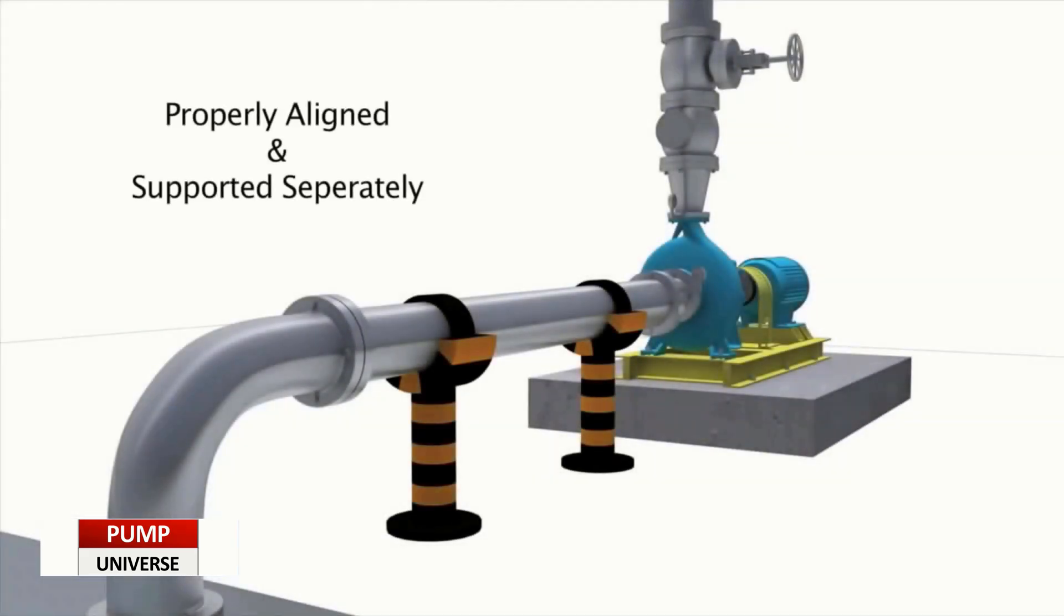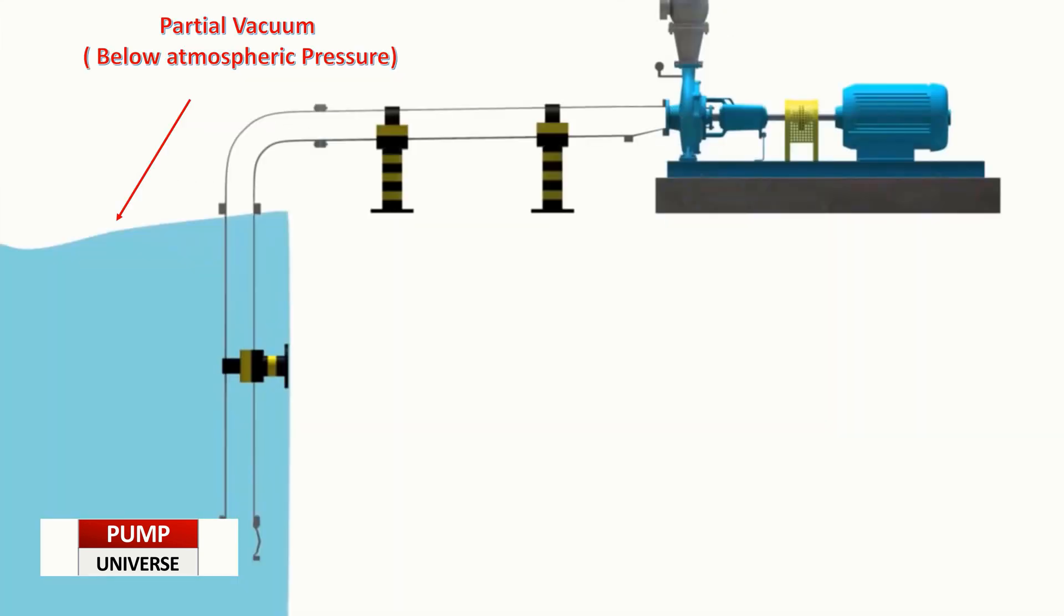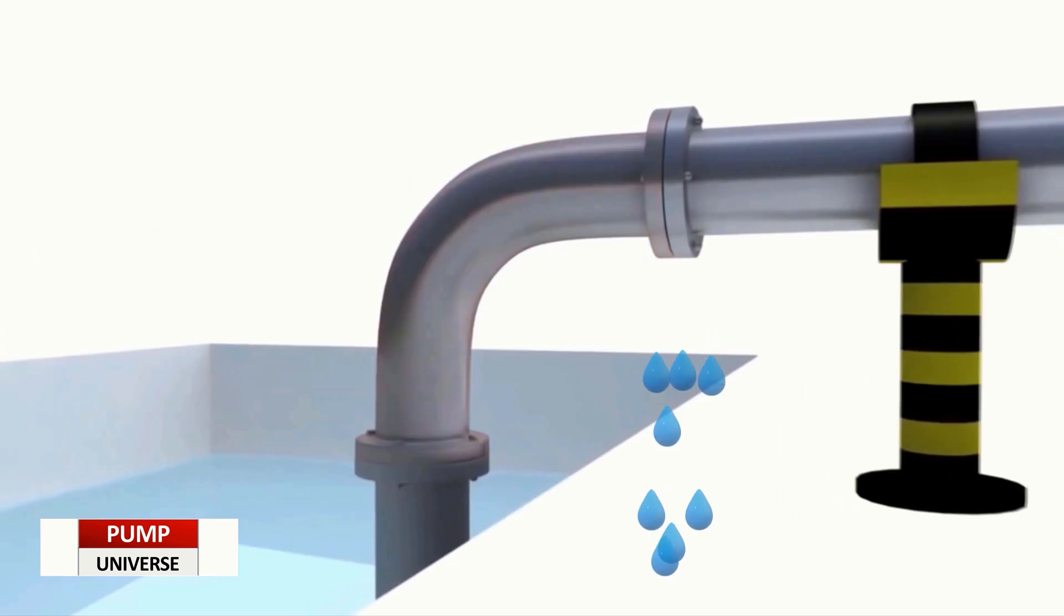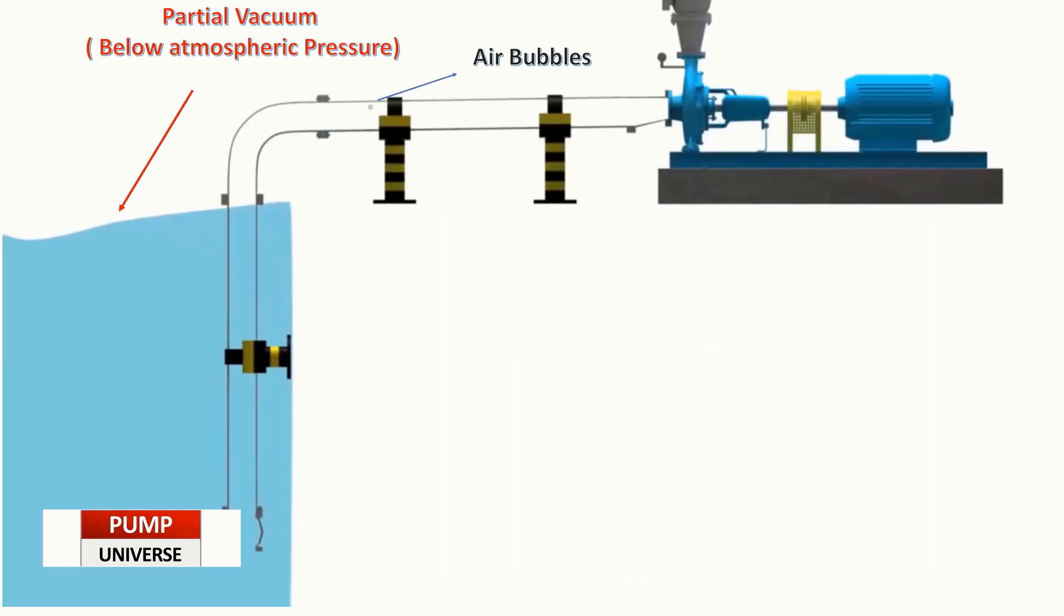Suction lift conditions. Suction lift conditions can be a big source of air bubbles as they are under partial vacuum conditions all the time. And if they have leaks in their fittings, there is a high probability of air to sneak into the pump system.